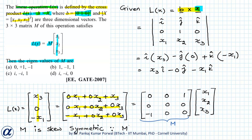Because M-transpose equals minus M, and we want to find the eigenvalues of matrix M. We know that for a skew-symmetric matrix, the eigenvalues are either zero or purely imaginary. There is only one choice that has zero or purely imaginary eigenvalues, and that is choice D. So our answer D is correct. And if you want, you can actually find the eigenvalues of this matrix directly and come to the same conclusion.